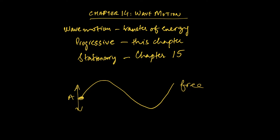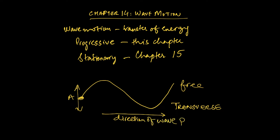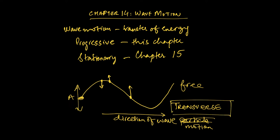This kind of wave is called a transverse wave. The wave itself is traveling in one direction — the direction of wave travel — whereas the individual particles of the rope are moving perpendicular to that. For instance, one particle might be moving up, another is at its highest point and about to move down. The direction of particle motion is perpendicular to the direction of wave motion — that's why it's called a transverse wave.